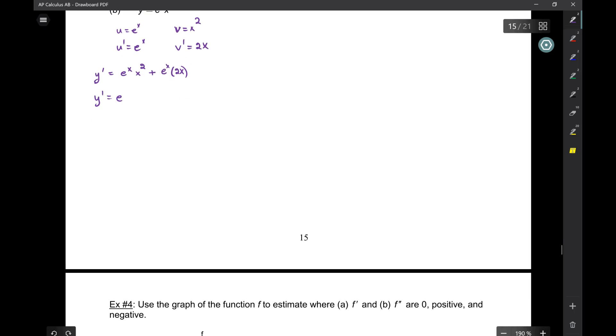So, I'm gonna factor out an e to the x. And I'm gonna get x squared plus 2x now. Because I need to find y double prime. You can find y double prime here, but it's a mess. Because you gotta do product rule here, product rule there. That's just crazy. You can factor out e to the x, and you can do product rule one time.